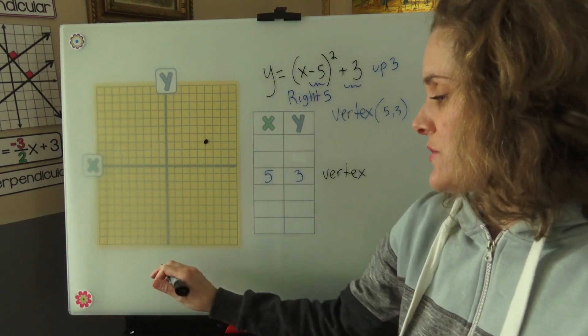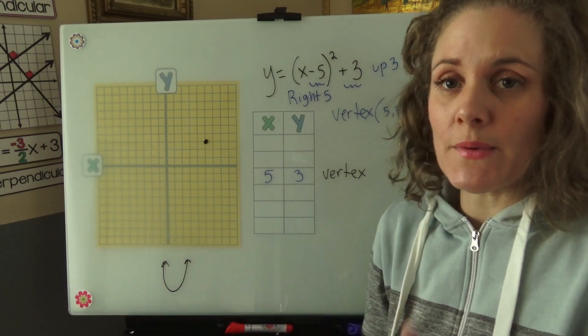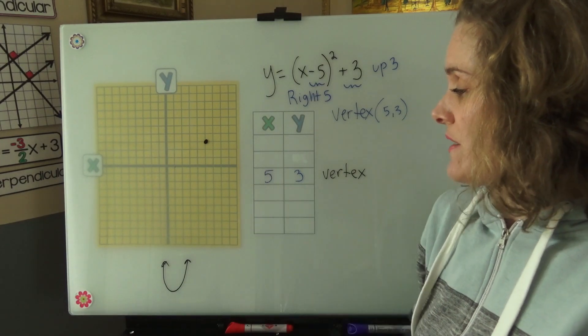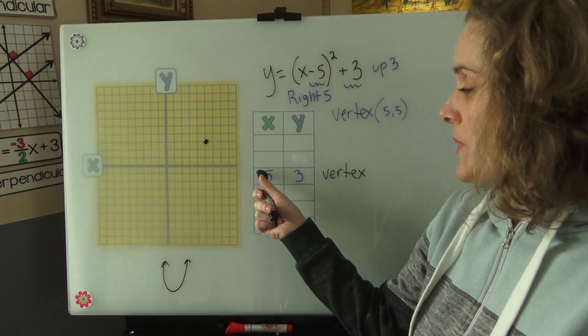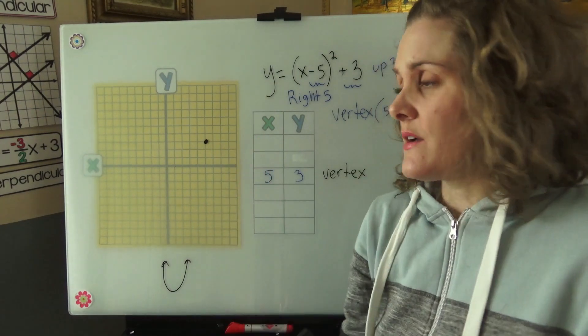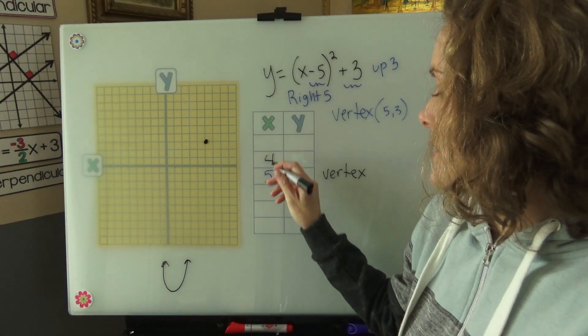We know that parabolas are symmetrical. They're the same on both sides. So let's pick a number that's less than 5 for our x value, and let's pick a number that's bigger than 5 for our x value and see which way that parabola is going to open up. So 4 and 6.